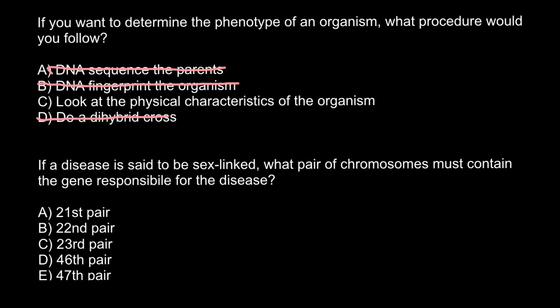In order to determine phenotype, we just have to look at the physical characteristics of the organism, because phenotype is the physical characteristics of the organism — something we can see visually. Sometimes some phenotypic characteristics we cannot see with the naked eye; for example, blood groups. We still differentiate them into four different blood groups, and we know that these four blood groups are made by six genotypes.